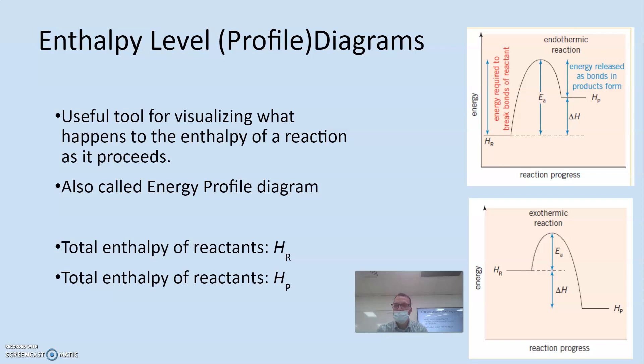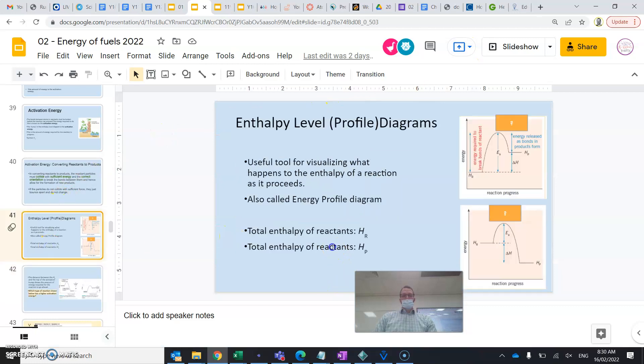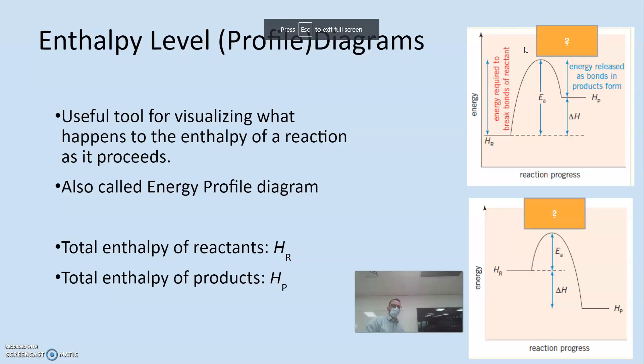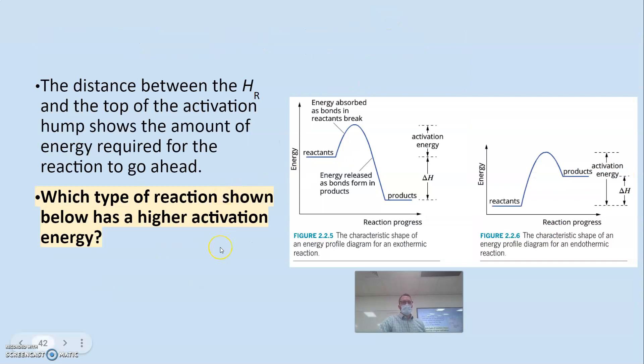That should say products, you're right. So I can fix it on here. I'll need to re-download and re-upload the actual PowerPoint. The distance between HR and the top of the activation hump shows the amount of energy required. Which type of reaction shown below has the higher activation energy? The one on the left or the one on the right? The right has a higher activation energy, which is typical of endothermic reactions.